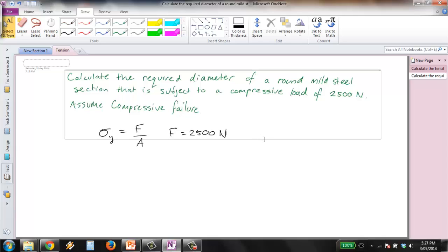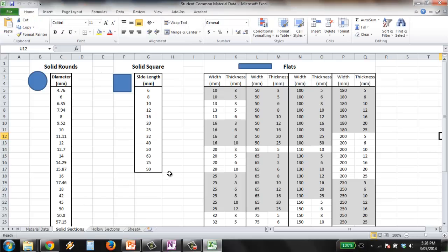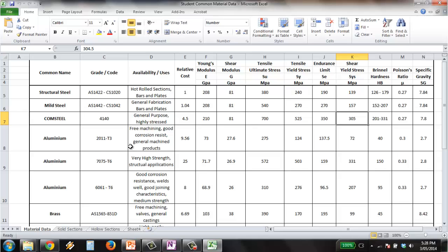And we can look up the yield stress. These tables is something we'll provide you. So go across to materials, we look up mild steel. We come across and we see that we have a yield stress of 270 MPa.